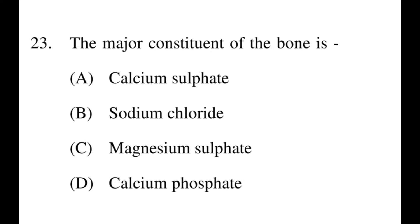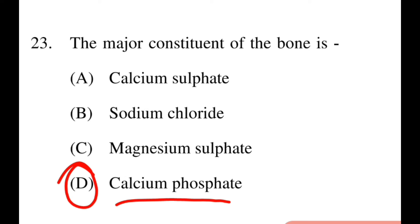Next question: The major constitution of bone is? Options: A: calcium sulphate, B: sodium chloride, C: magnesium sulphate, D: calcium phosphate. The right answer is D, calcium phosphate. Calcium and phosphorus — calcium phosphate is the major constituent of bone, which is what bone is made of.